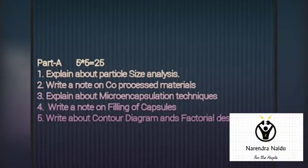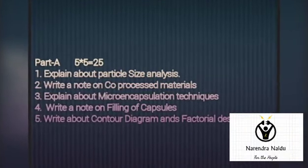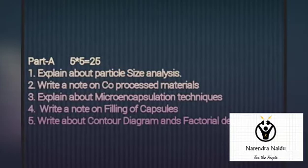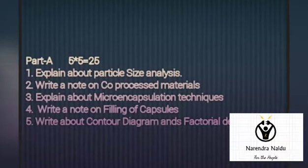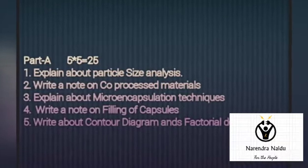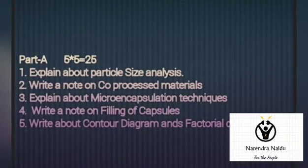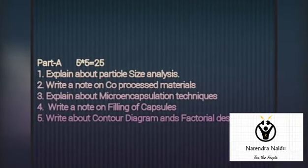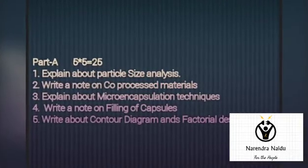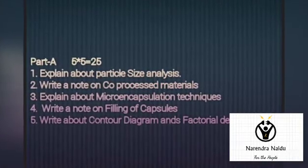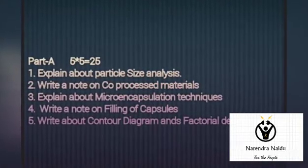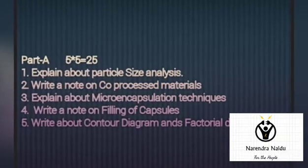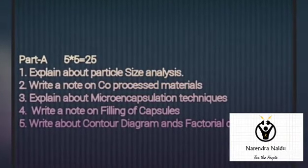The first part, Part A, contains five questions which carry 25 marks. The first question: explain about particle size analysis. Second question: write a note on co-processed materials. Third question: explain about microencapsulation techniques. Fourth: write a note on filling of capsules. Fifth: write about contour diagram and factorial design.